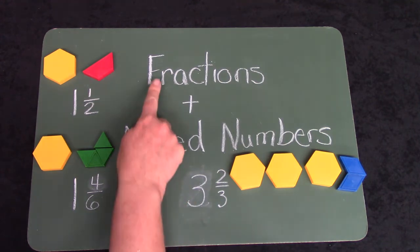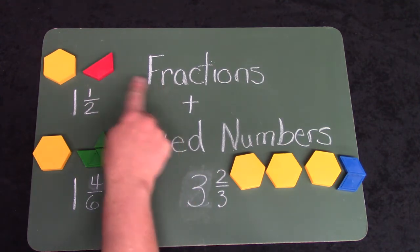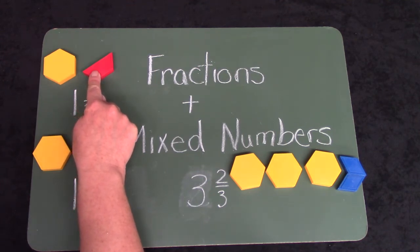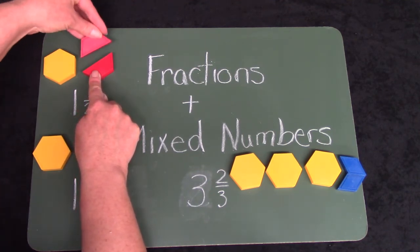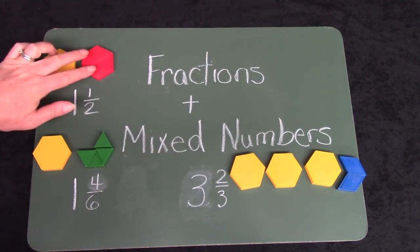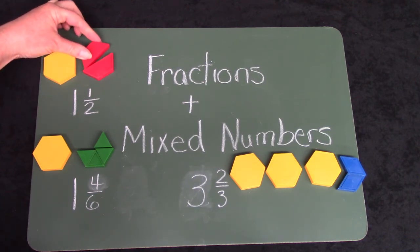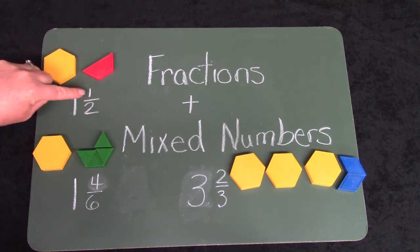Class, today we talked about fractions and mixed numbers. A fraction is part of a whole number. For instance, in order for me to have a whole hexagon, I would need two trapezoids. If I didn't have both of them, I would only have one half.